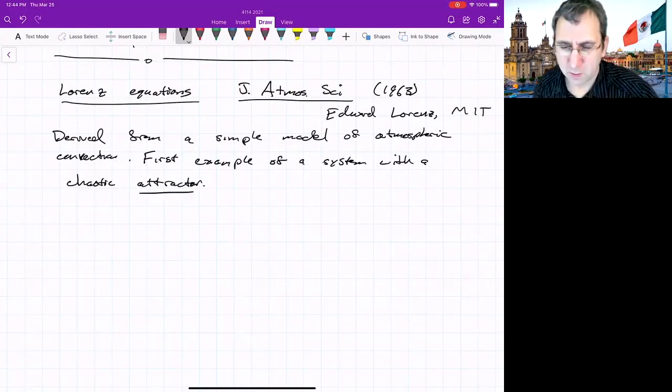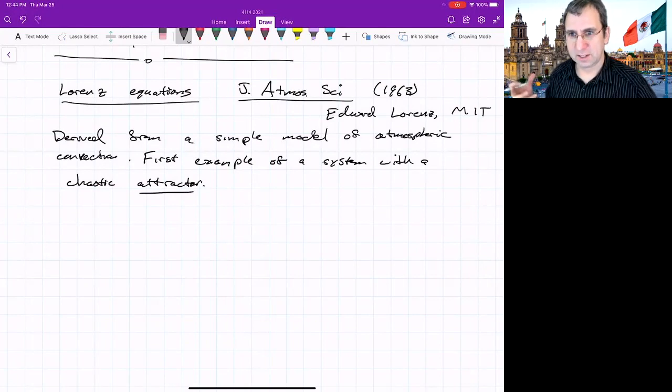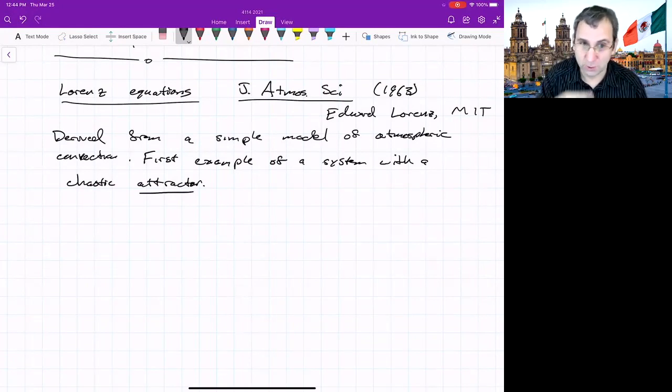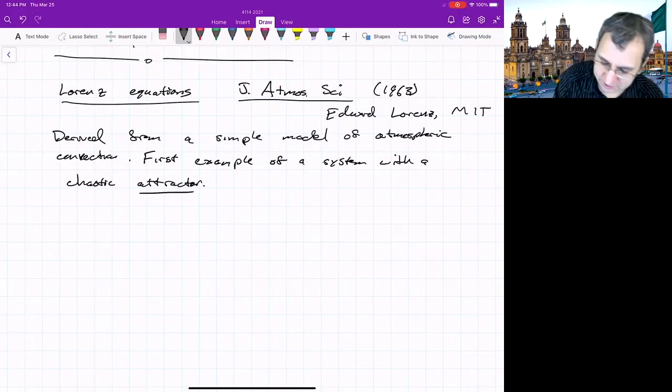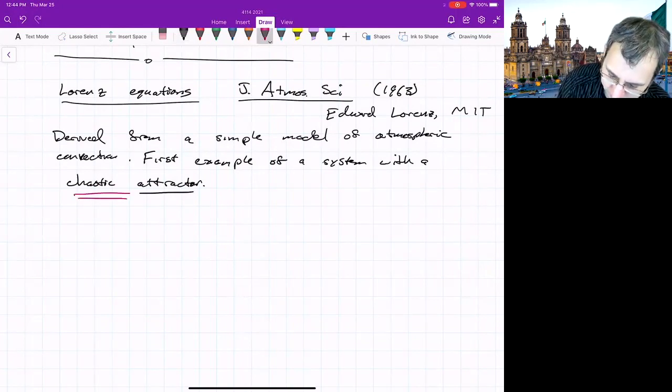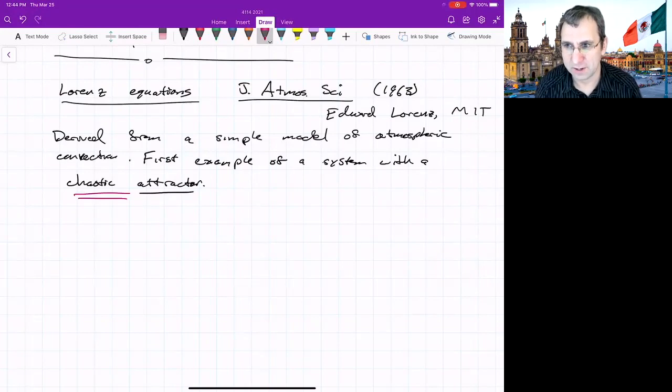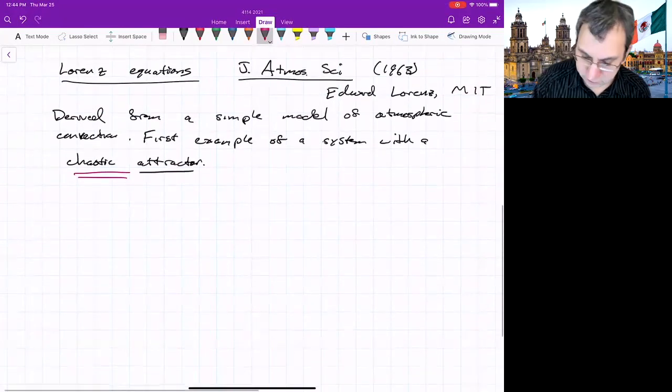And the key thing about it is it's the first example of a system with a chaotic attractor. So we've said something about what an attractor is. We've mostly talked about fixed points and limit cycles as being things that would attract. But a fixed point is a fixed point. There's nothing particularly interesting. A limit cycle is just a periodic orbit. This was the first example of an attractor where you also had chaos on the attractor, meaning things never settled down. It was indeed non-periodic. And it was sort of like perpetual motion. It never settles down to anything that looks like periodic or even quasi-periodic. So that's what was interesting about it.